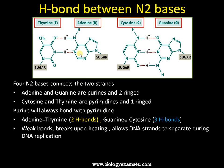A purine will always form bonds with a pyrimidine. Adenine will always pair with thymine, and cytosine will pair with guanine. The adenine-thymine bond is formed by two hydrogen bonds, whereas cytosine and guanine are bonded by three hydrogen bonds.